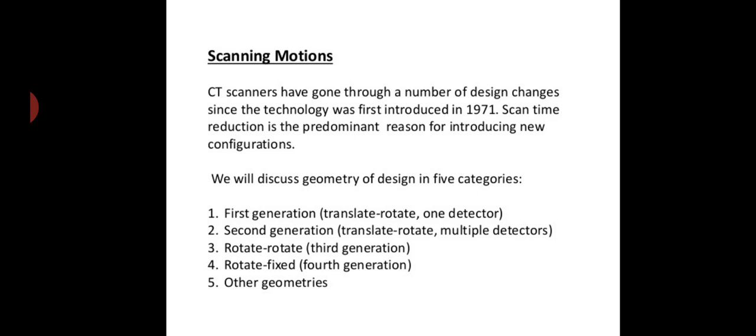The first generation used translate-rotate motion with only one detector. The second generation used translate-rotate motion again but with multiple detectors. In third generation, the motion was rotate-rotate, and in the fourth generation, the motion was rotate-fixed. In both of them, multiple detectors were used. There are also several other geometries which we will discuss in this video.